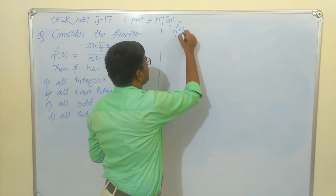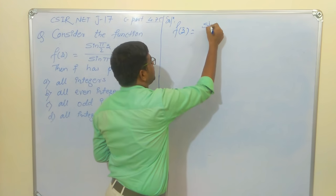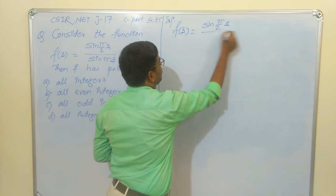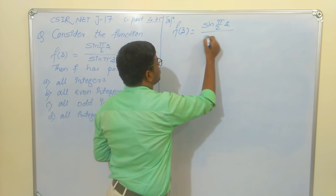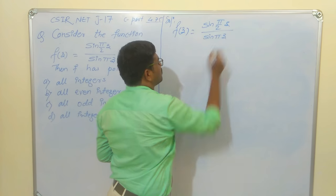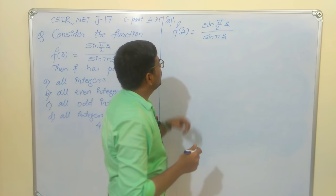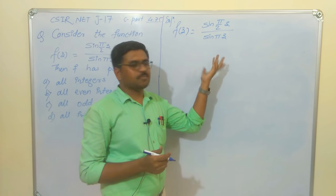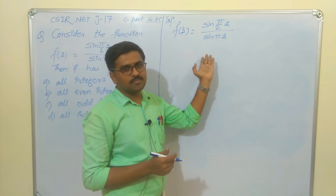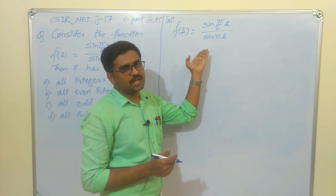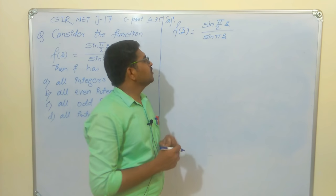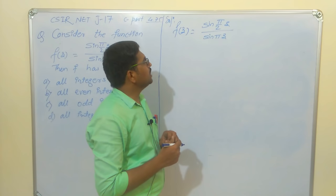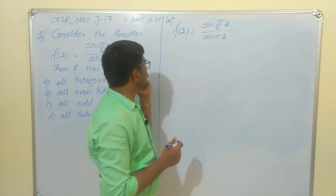f(z) = sin(πz/2) / sin(πz). The denominator equals zero wherever the function has a problem — that is where the singular points will be. So at z=0 there is a problem.